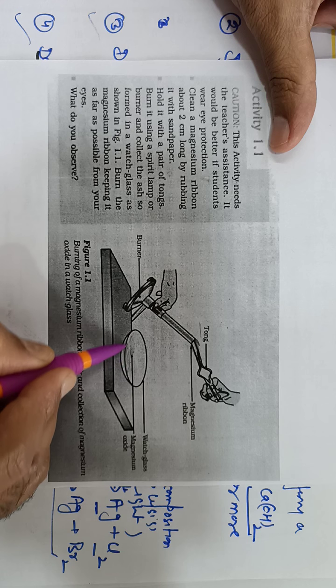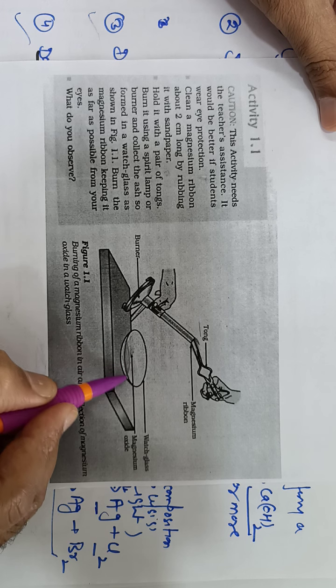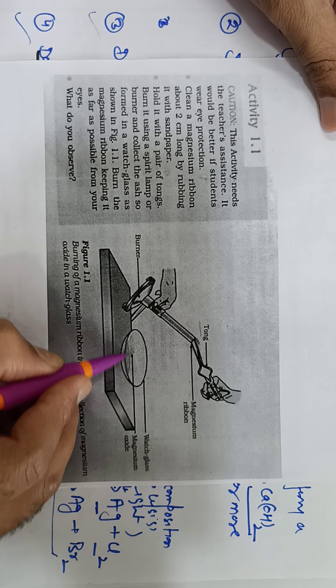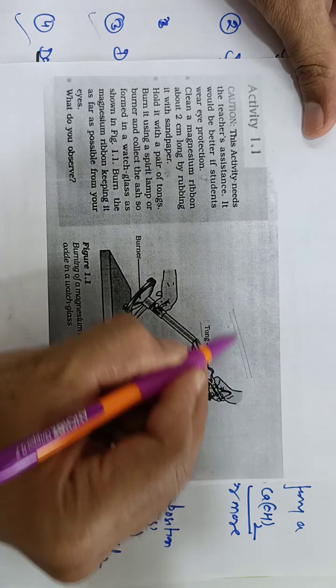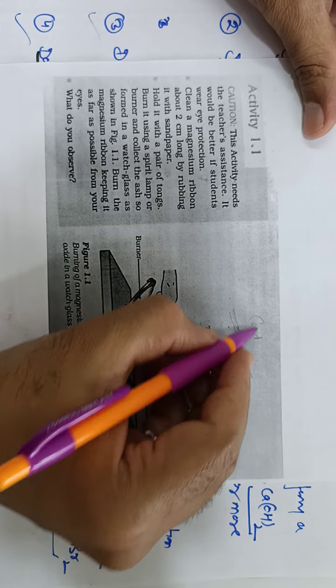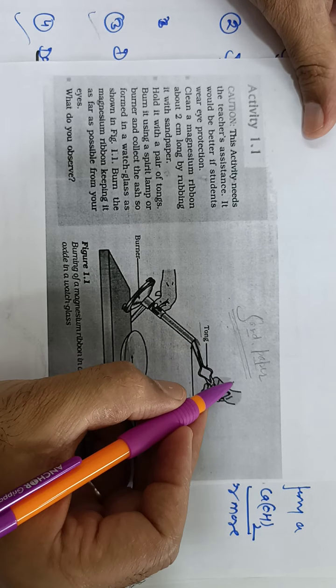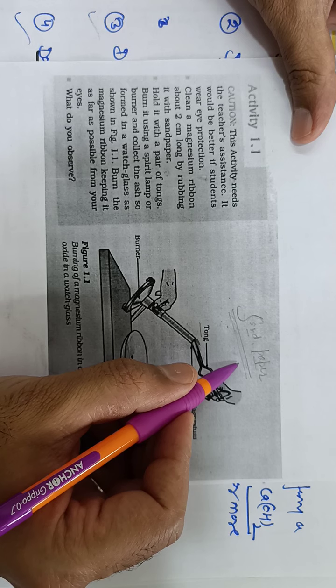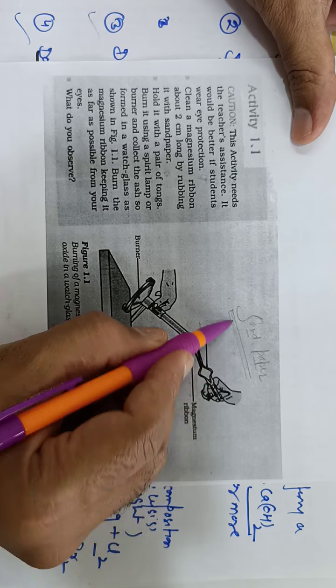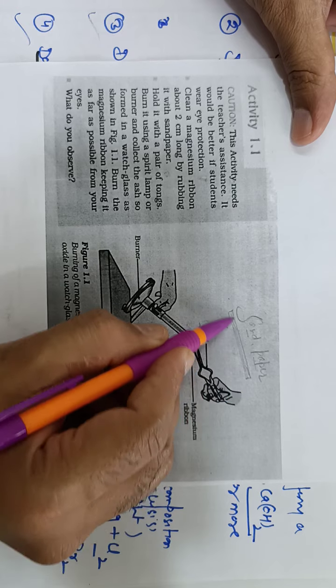This white powder formed is a product of combination and this is called the combination reaction. And one NCERT question arises: why is the magnesium ribbon cleaned with sandpaper? The simple answer is magnesium is a reactive element. It reacts with oxygen in the air and forms an oxide layer. So to remove the oxide layer, it should be rubbed with sandpaper. We will also discuss this in the NCERT questions.